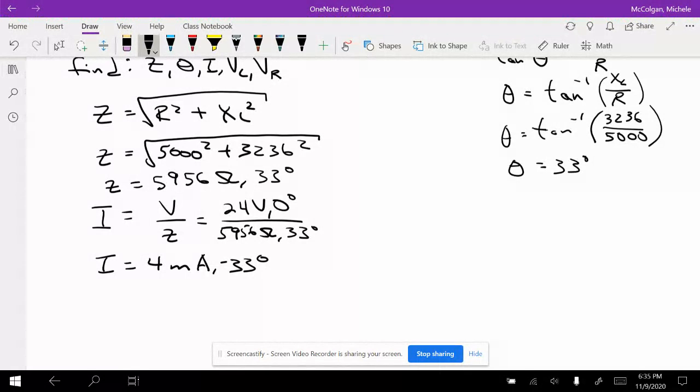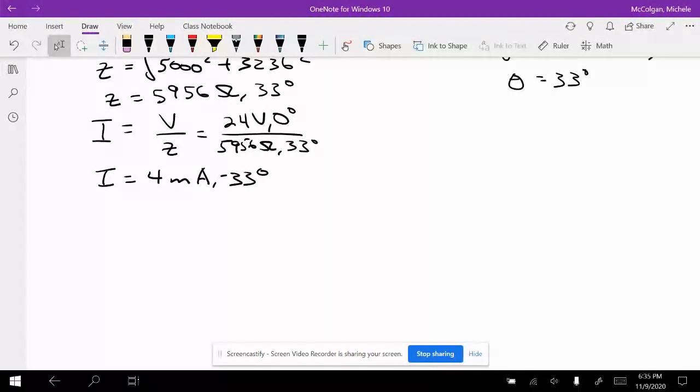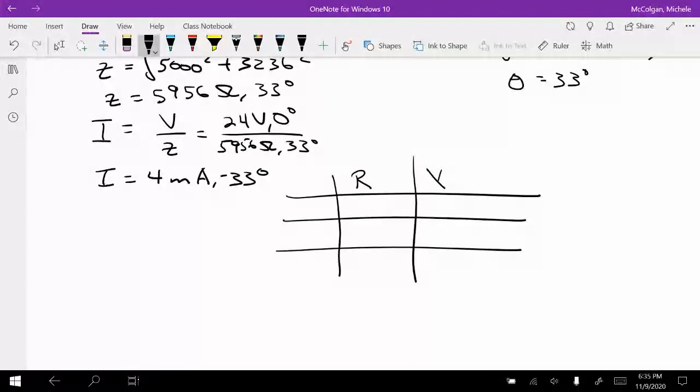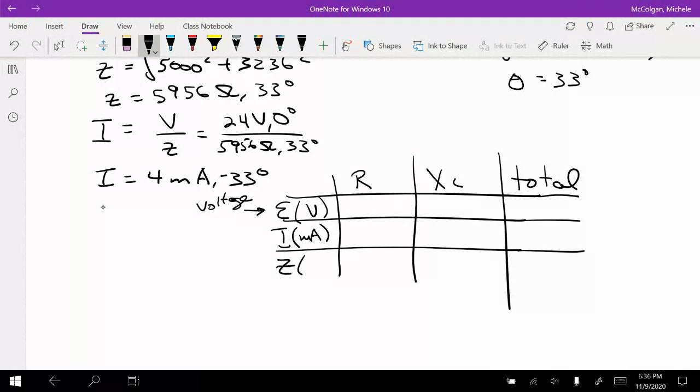And so now we want to find the voltage drops across each of the elements. So we're going to create a table. Let's make the table over here. So I'm going to have R, XL, and total. And this is going to be my voltage, which now that we're doing AC circuits, we usually write as EMF. And so this is in volts. This is voltage. This is going to be my current I, and we're going to use milliamps. And this is going to be my Z, and this is going to be in ohms.